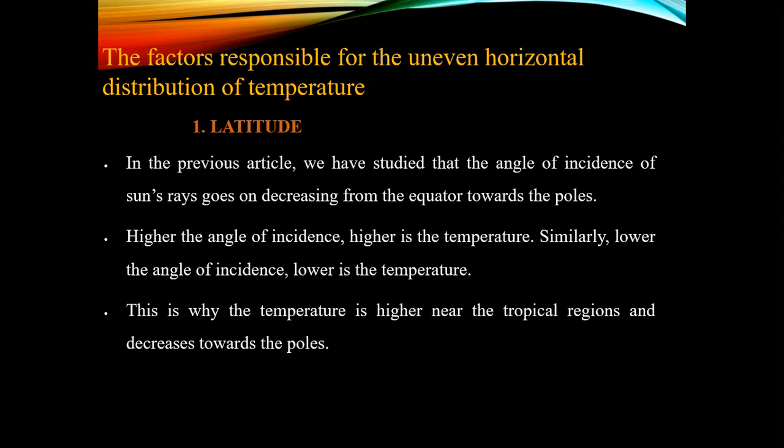Now we will focus on the factors responsible for the uneven distribution of Horizontal Temperature. The first factor is latitude. The angle of incidence of sunrays goes on decreasing from the equator towards the poles. Higher the angle of incidence, higher is the temperature; lower the angle of incidence, lower is the temperature. This is why temperature is higher near the tropical regions and decreases towards the polar regions.